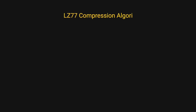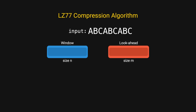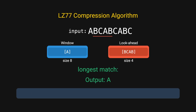LZ77 compression works by maintaining a sliding window of size N of previously seen data and a lookahead window of size M. For example, with a window size of 8 and a lookahead window size of 4. Initially, the window is an empty array and the lookahead contains A, B, C, A. The algorithm searches for the longest match between the lookahead window and the sliding window. In this case there is no match, so we output A as a literal and we expand the window.